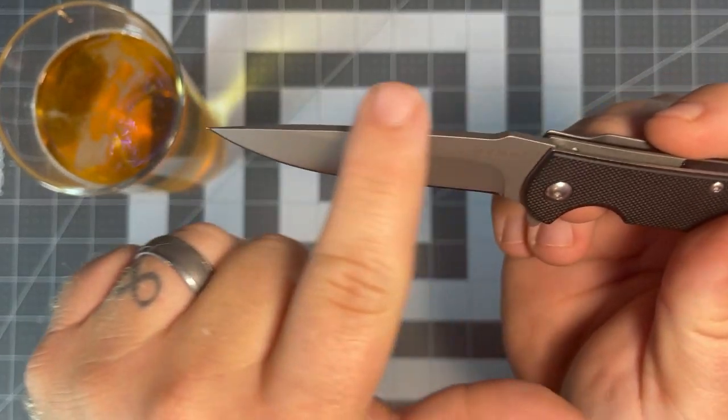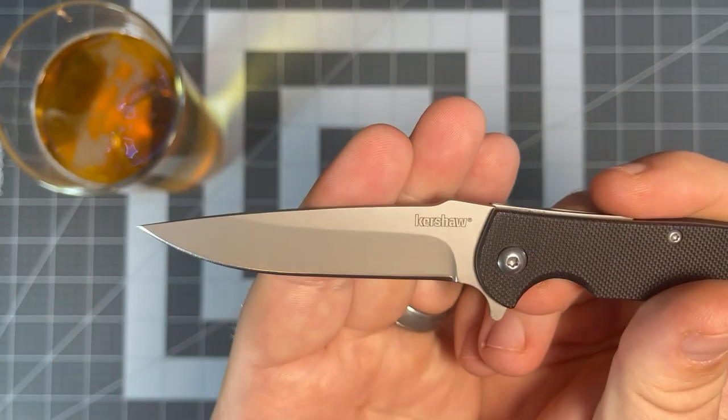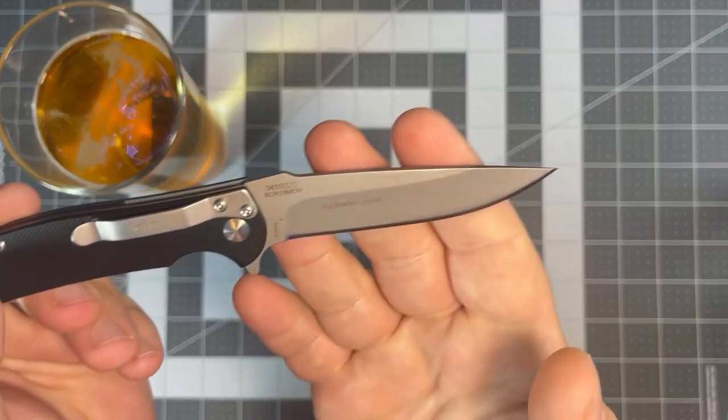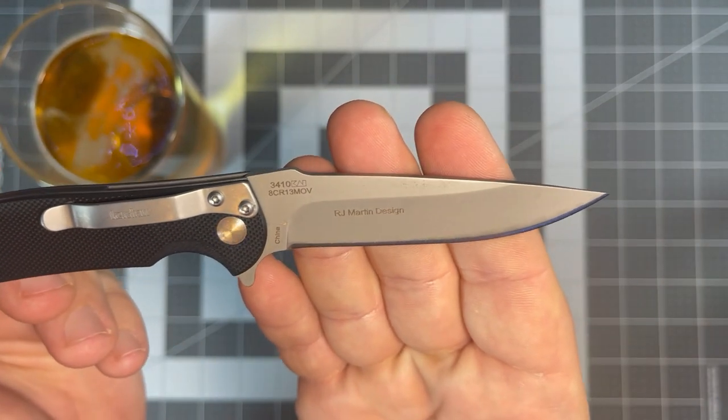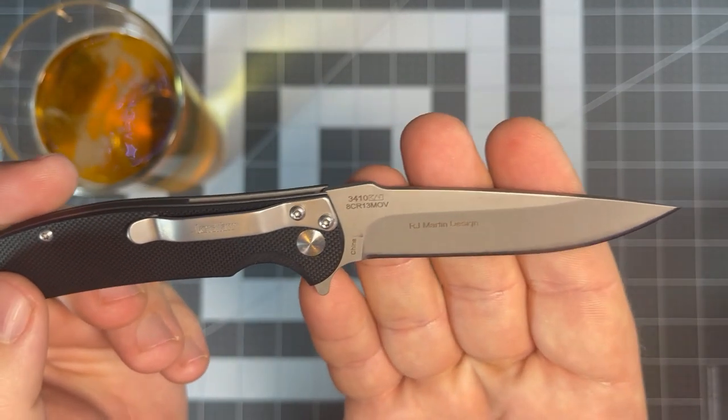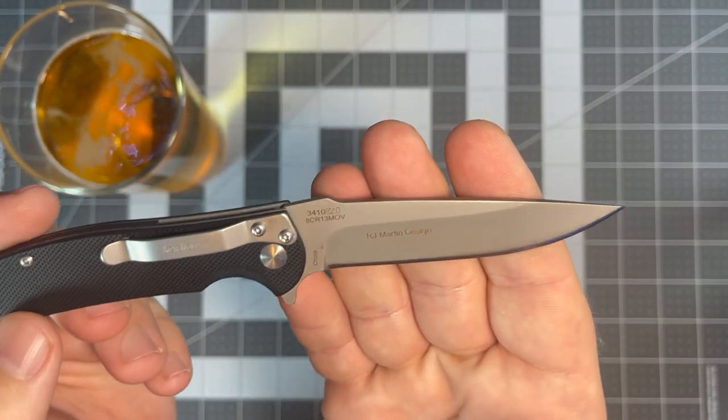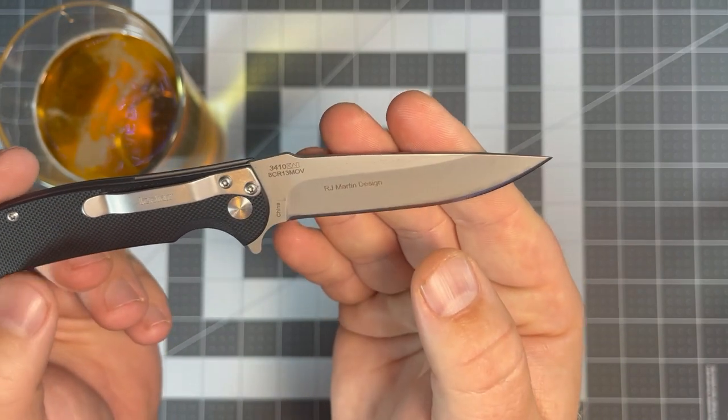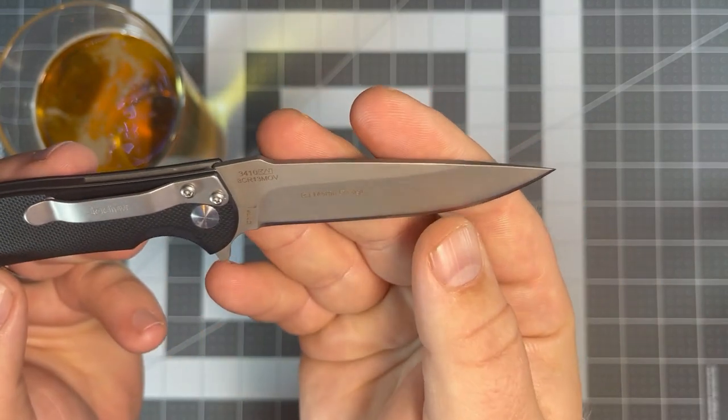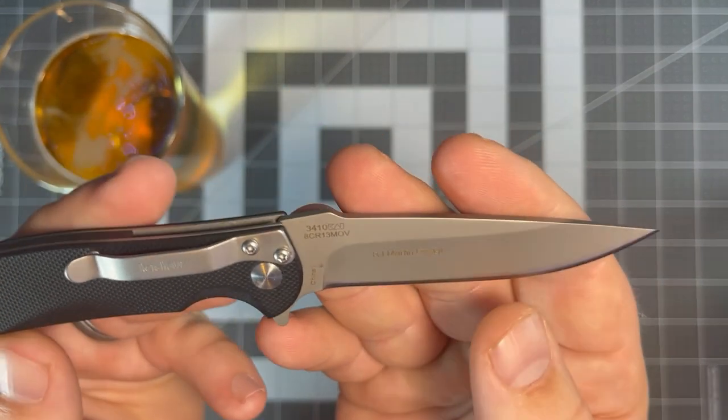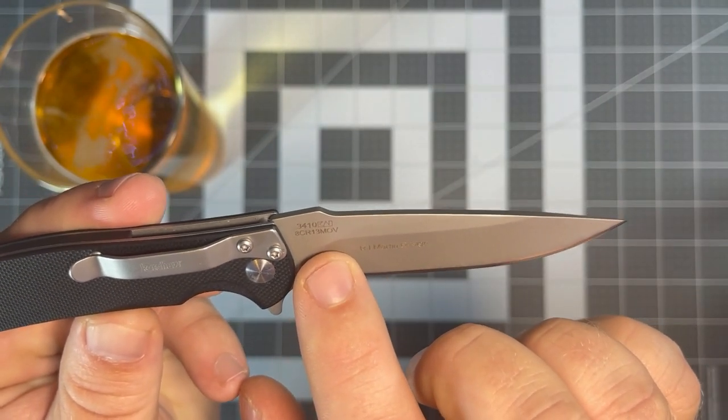Taking a look at the blade, you have a nice drop point blade here and a bead blast finish. This side, you got Kershaw there. And on the other side, got an RJ Martin design. I don't know too much about him. In researching a little bit, looks like he's into customs. I think I typed his name in on a Blade HQ or SMKW or something. And the prices for like $3,000, $4,000 knives. So I'm like, that's great. Not something I'll ever have, but hey, there's people out there for it. You got the steel, which is 8Cr13MoV, which is a definitely a budget steel.